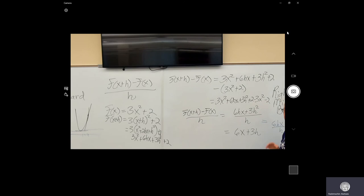So, 3x squared minus 3x squared is 0, 2 minus 2 is 0, and what we're left with is 6hx plus 3h squared. That's what f of x plus h minus f of x is.